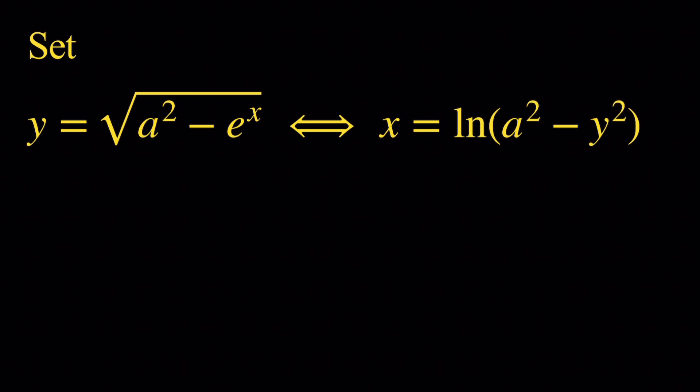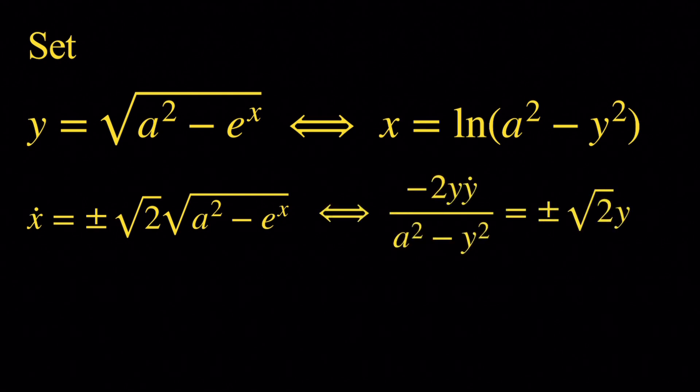Now we're going to perform a change of variable. We're going to say that y equals the square root of a squared minus e to the x, which is equivalent to setting x equal to the natural log of a squared minus y squared. The original equation — x-dot equals plus or minus root 2 times the square root of a squared minus e to the x — will be equivalent to: negative 2y times y-dot over a squared minus y squared equals plus or minus root 2 times y.